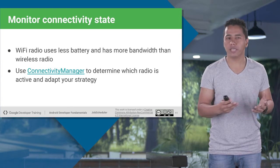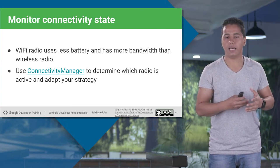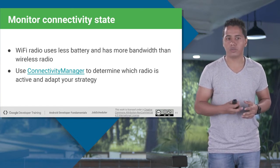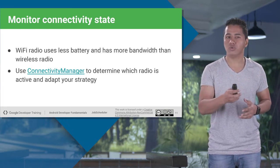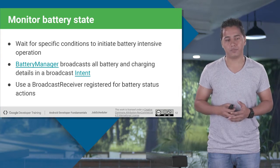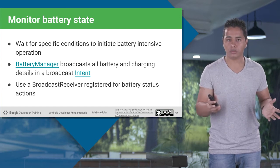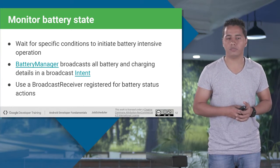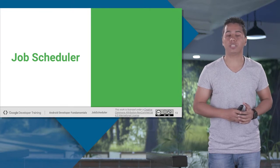To monitor your connectivity state, we have a class named ConnectivityManager, which we have already seen in our AsyncTask when we connect to the internet. ConnectivityManager also manages all your wireless radios. It is good practice to use Wi-Fi radio over your mobile wireless radio, as mobile radio consumes more bandwidth. To monitor battery status, we have a BatteryManager which broadcasts an intent over the system, and broadcast receivers listening for that battery status intent will get invoked.